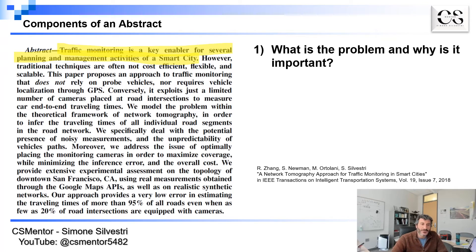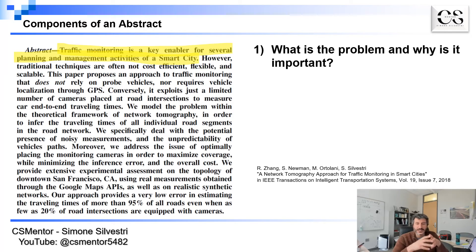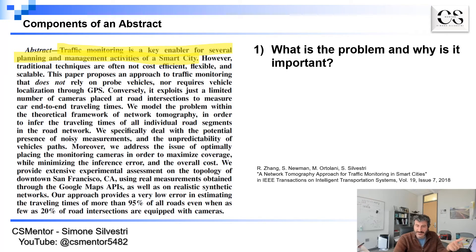The first thing you want to do in an abstract is start with the problem and why it is important. In this paper we did that with one single sentence: 'Traffic monitoring is a key enabler for several planning and management activities of a smart city.' The key components here are: we state the problem — traffic monitoring — which is a sufficiently general term most people understand, and we explain why it is important — for planning and management activities of a smart city. We could have said 'vehicular traffic monitoring,' but since we were submitting to Transactions on Intelligent Transportation Systems, the term vehicular was implied.